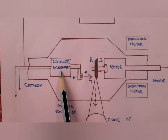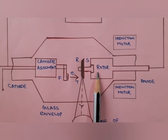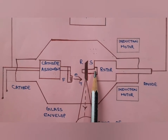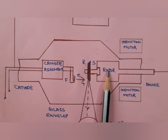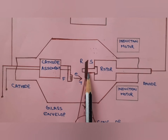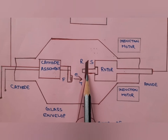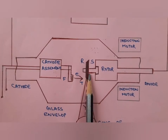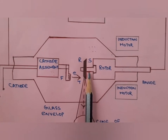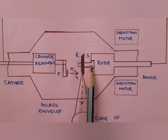Now for the anode assembly, which generally has three parts: the anode disc, the anode stem, and the rotor. The anode disc is made up of tungsten, or an alloy of tungsten and rhenium — 90% tungsten and 10% rhenium — which reduces the grazing effect caused by thermal stress. The anode stem is made up of molybdenum, which has a high melting point and poor heat conduction.